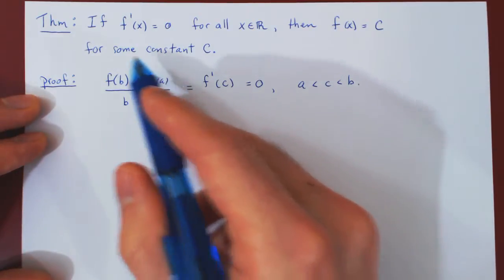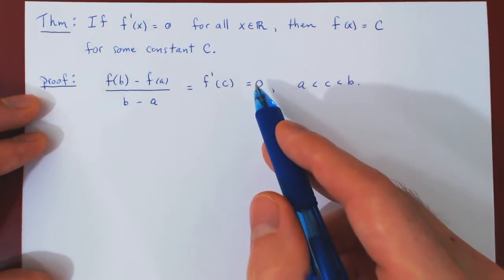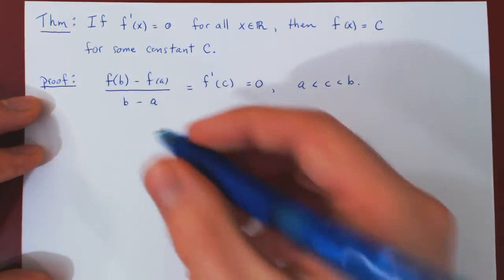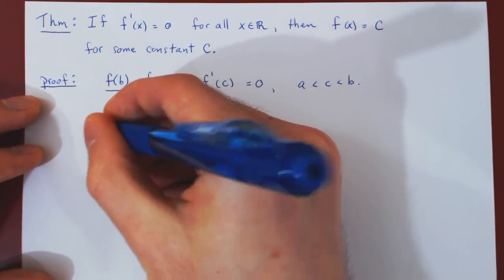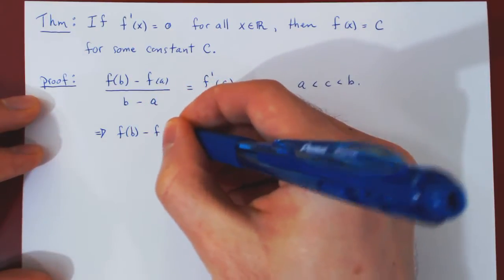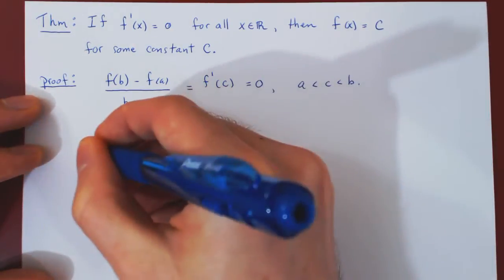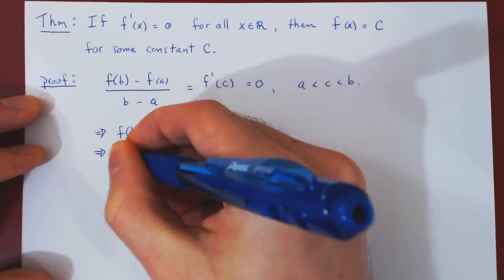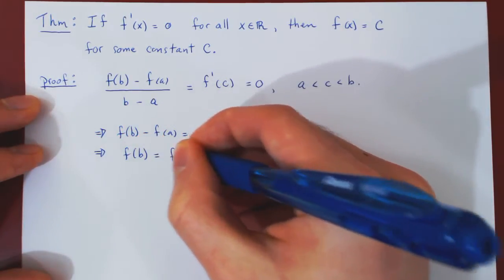But now look at the given fraction here. If a fraction is equal to 0, then its numerator must be equal to 0. So it follows that f of b minus f of a must be equal to 0. Therefore, that f of b is equal to f of a.